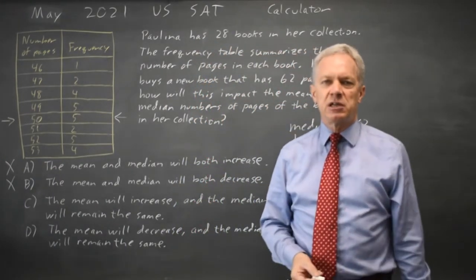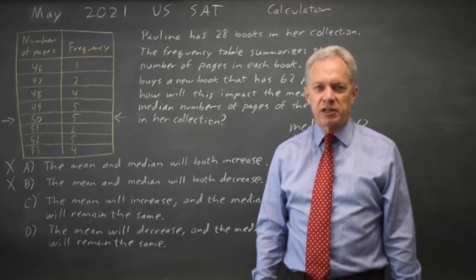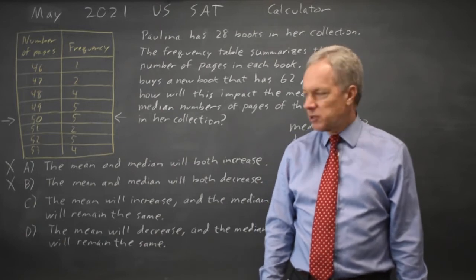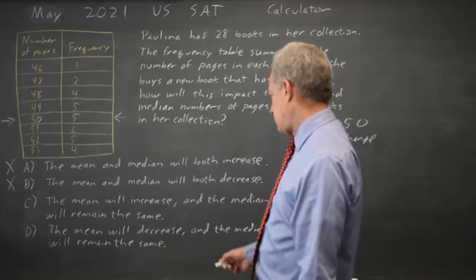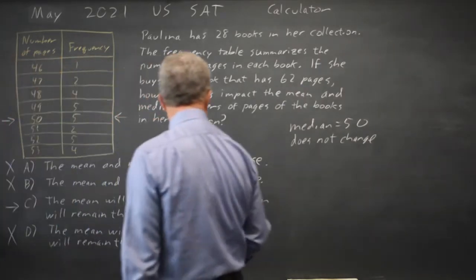The question is what happens to the mean if you add a high outlier. If you add a value greater than any of the other observations, the mean will always go up. You don't have to do the numbers on that. So choice C, the mean will increase. It certainly will not decrease. So the correct answer is C.